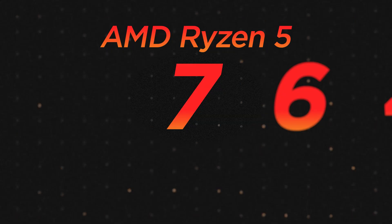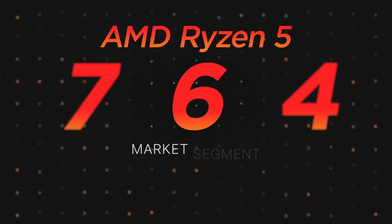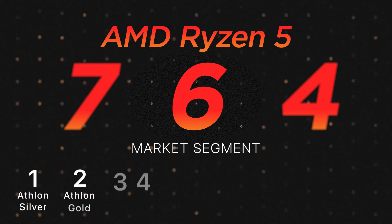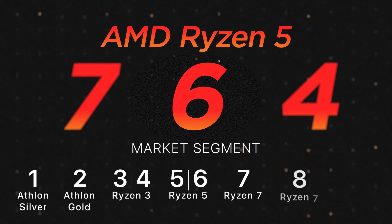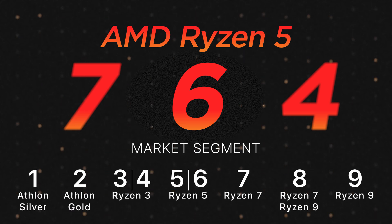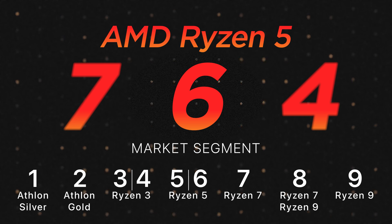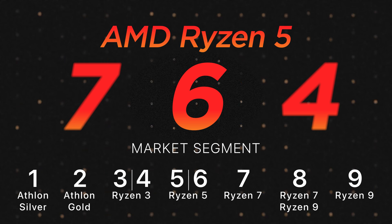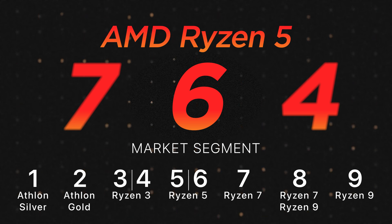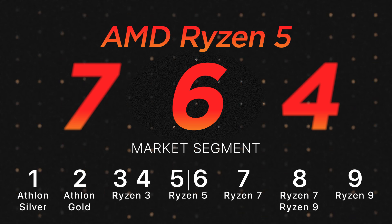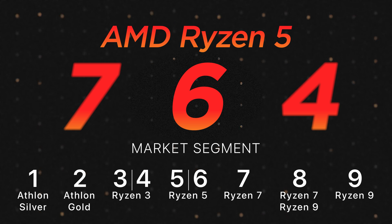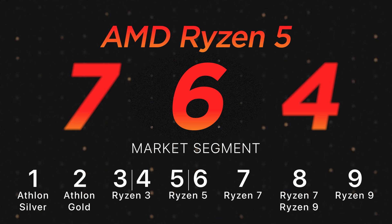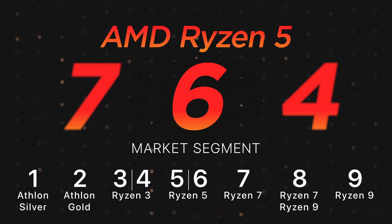The market segment ranges from 1 to 9 and simply states what type of AMD processor it is: 1 is Athlon Silver, 2 is Athlon Gold, 3 and 4 are for Ryzen 3, 5 and 6 for Ryzen 5, 7 for Ryzen 7, 8 for both Ryzen 7 and 9, and 9 for Ryzen 9.